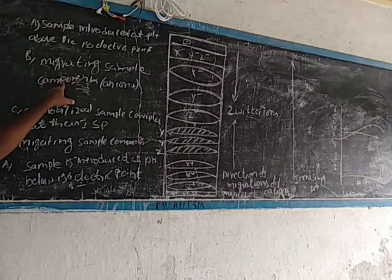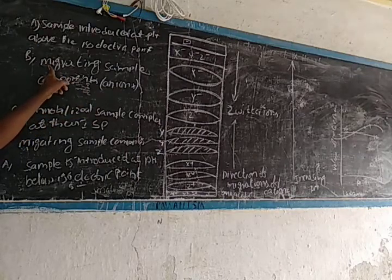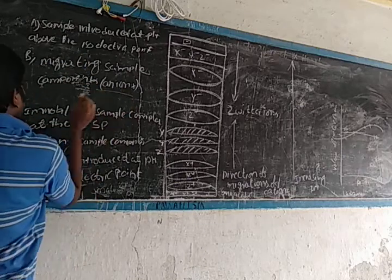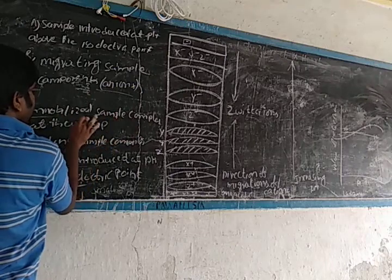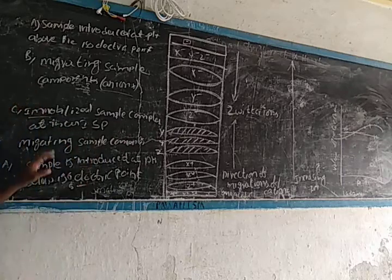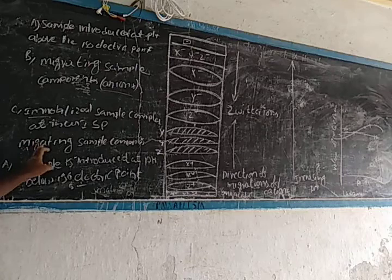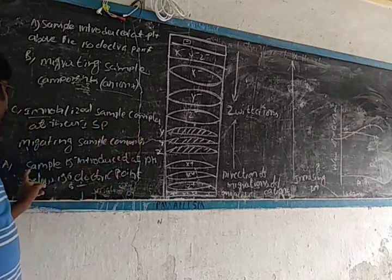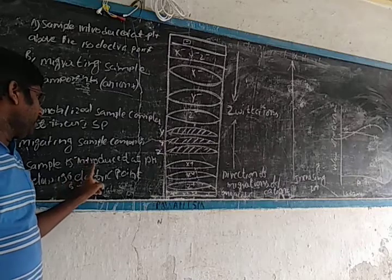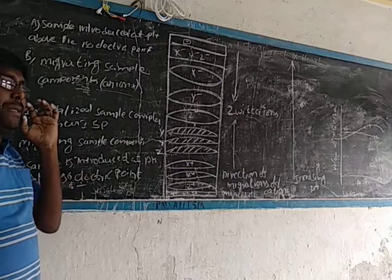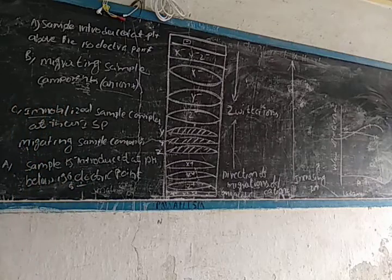We can migrate the sample components of the mixture. The sample components migrate toward their isoelectric point. When a sample is introduced at a pH below the isoelectric point, we have to identify the isoelectric point. We can immobilize the sample complex at a certain pH zone.